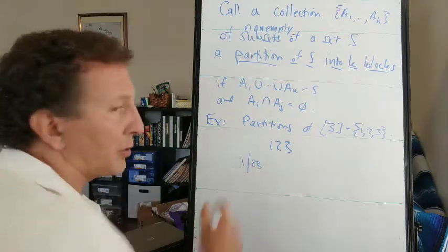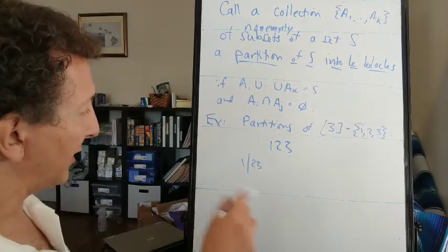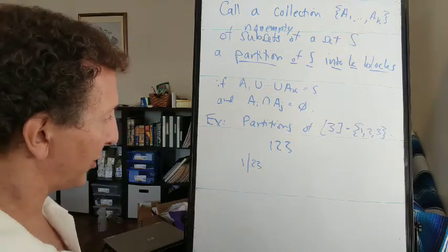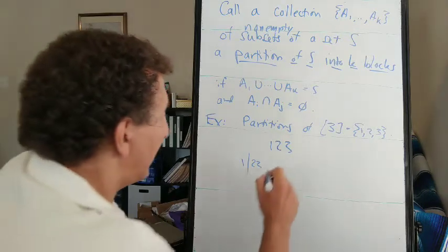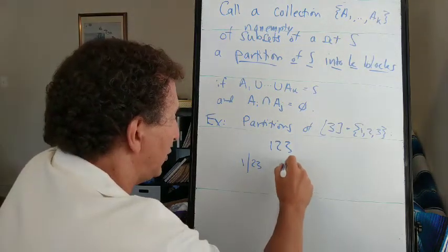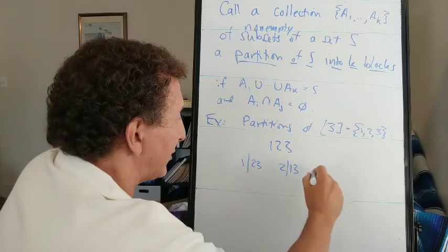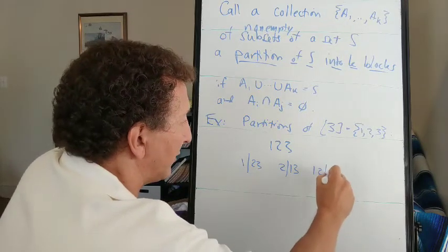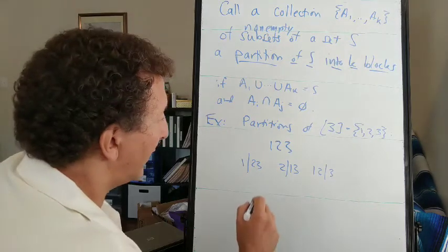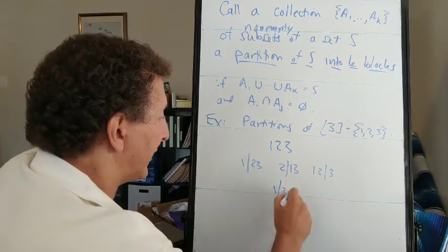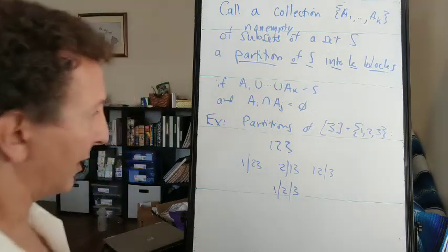We could put 1 in one block and 2, 3 in another block. And these blocks are usually written with a vertical bar separating them so you don't have to write all the braces and commas. We could put 2 in its own block, 1, 3 together. Or we could put 1 and 2 together and 3 in its own block. And then I guess we could put every element in its own block.